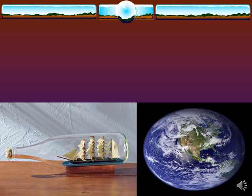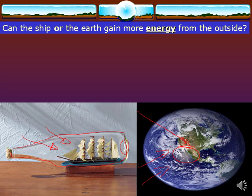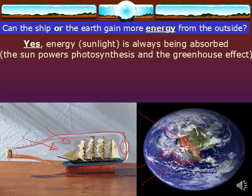Now let's think of this same analogy when we're thinking of energy. Let's start with the ship again because it's easier. Does the ship get any energy from the outside world, outside of the bottle? Well, you can actually see right here there's light coming through the bottle, coming through the glass to the ship — hence, you can see the ship. And the same is actually true of Earth. There's always light coming into the Earth from the sun, and you can see the bright spot right here. So in terms of energy, there's always some kind of sunlight coming in.